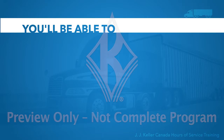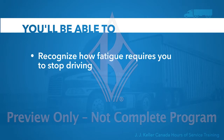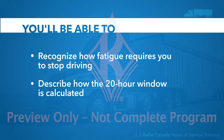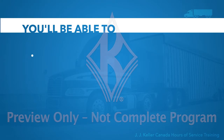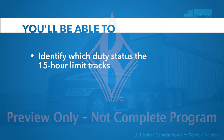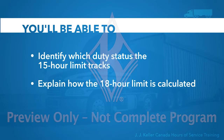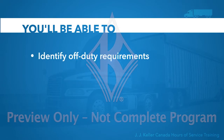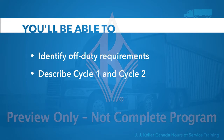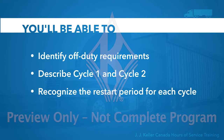This program is designed to help you avoid operating a CMV when fatigued and comply with the Hours of Service limits. After completing this module, you'll be able to recognize how fatigue requires you to stop driving even if you have hours left to legally operate, describe how the 20-hour window is calculated, identify which duty status the 15-hour limit tracks, explain how the 18-hour limit is calculated, and identify off-duty requirements. You'll also be able to describe cycle 1 (the 80-hour, 7-day cycle) and cycle 2 (the 120-hour, 14-day cycle), and recognize the restart periods for each.